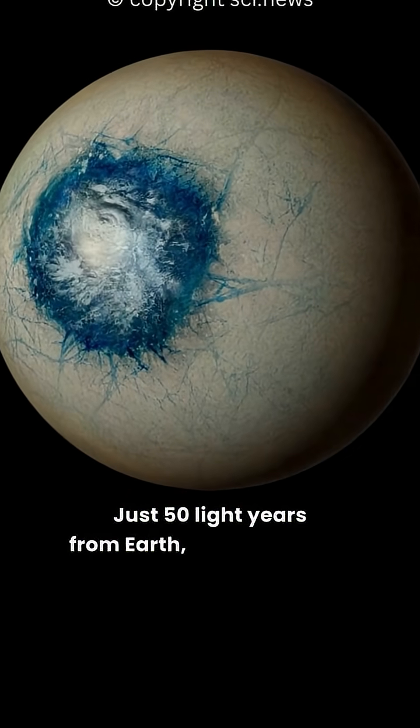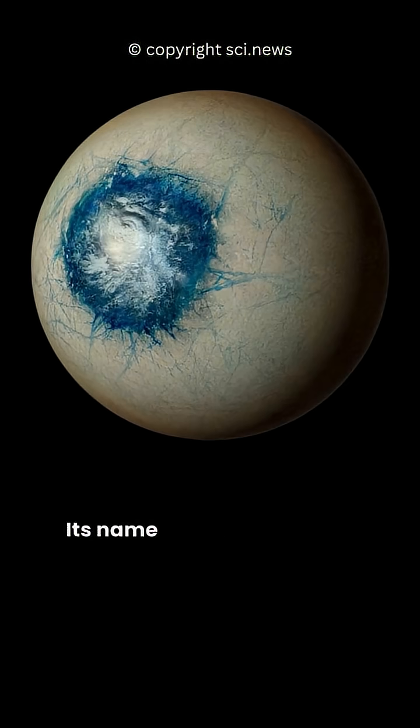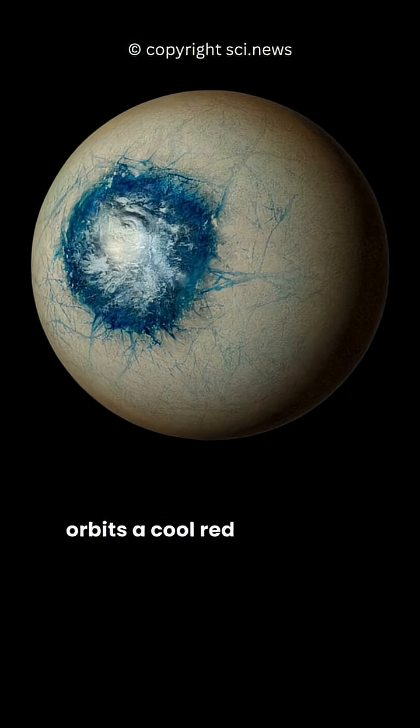Just 50 light-years from Earth, scientists have found one of the strangest planets ever seen. Its name is LHS-1140b, and it orbits a cool red dwarf star.